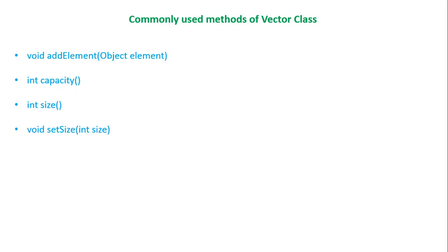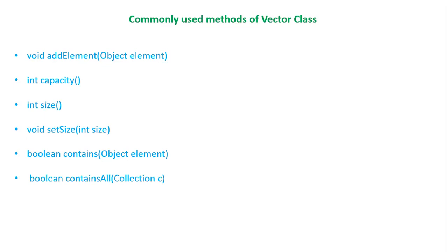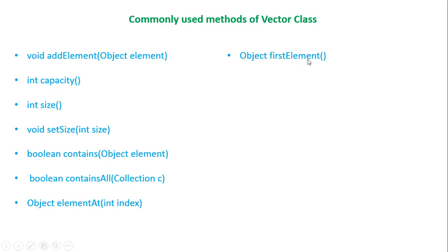The next method is setSize, which changes the existing size to the specified size passed as a parameter. The contains method checks whether the specified element is present in the Vector — it returns true if found, otherwise false. The containsAll method returns true if all elements of collection C are present in the Vector. The elementAt method returns the element at a specified location. The firstElement method gets the first element, and lastElement returns the last element of the Vector.